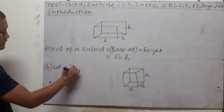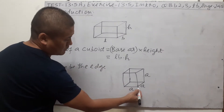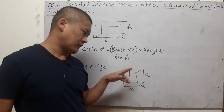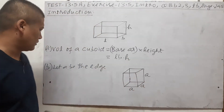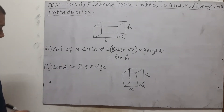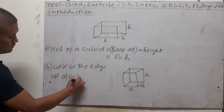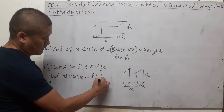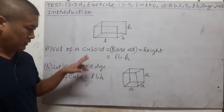A cube is a cuboid in which the length, breadth, and height are all the same. Let 'a' be the edge — one of the measurements of the edges. The main characteristic of a cube is that all 12 edges are of the same length. Volume of a cube will be given by L × B × H because by definition a cube is a cuboid, so it will have the same formula.